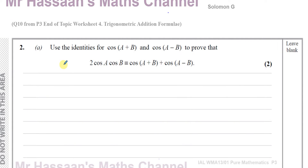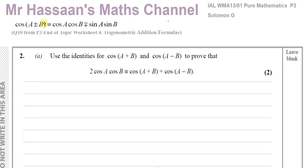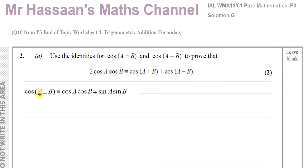Welcome back, this is Mr. Hassan's Maths Channel and I'm now answering question 10 from P3, the P3 endotopic worksheet number 4, which is about trigonometric addition formulae. This is related to the P3 book and is taken from an old past paper, part of the Solomon collection — Solomon G, question number 2 from the old C3 papers. Part A asks us to use the identities for cos(A+B) and cos(A−B) to prove that 2cosAcosB is identical to cos(A+B) + cos(A−B). We'll use the addition formulae given in the formula book.